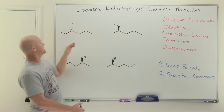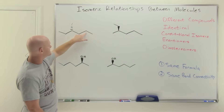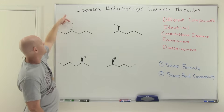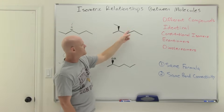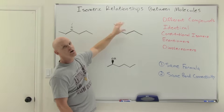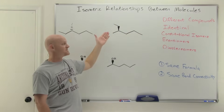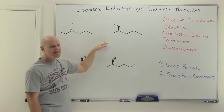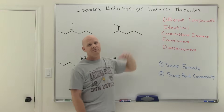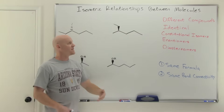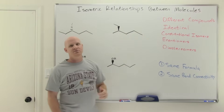Looking at this first pair, the first structure has seven carbons and is saturated; so does the second. They're both C7H16, so we can rule out different compounds. They might be identical, or they might be one of the different types of isomers.